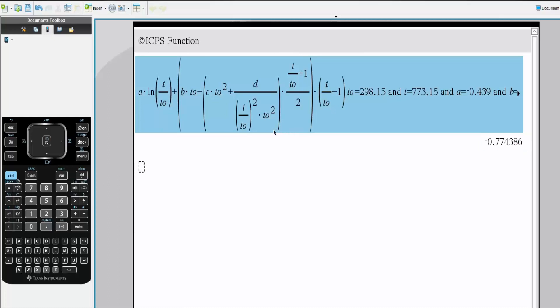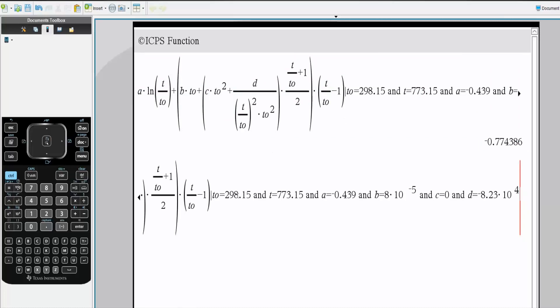I go back, I hit enter. Now I have the equation. I can easily change the numbers. Instead of 290, I can make it 398. Instead of 773, I can make it 873. I can very easily change numbers.